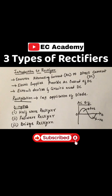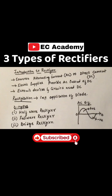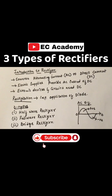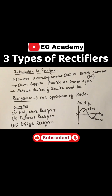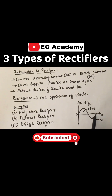Half wave rectifier rectifies either the positive half or the negative half of the waveform, so the name is given as half wave rectifier. The full wave rectifier rectifies the complete waveform, that's why the name full wave rectifier.